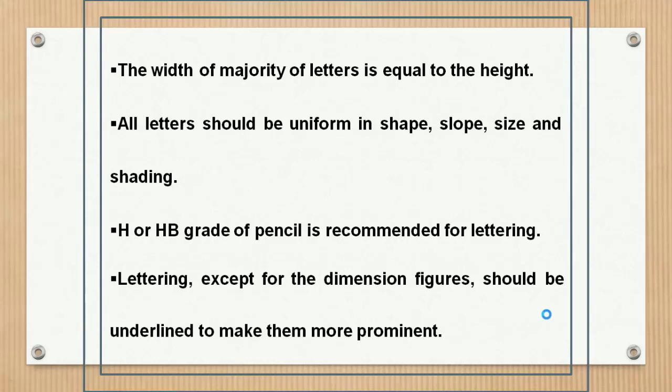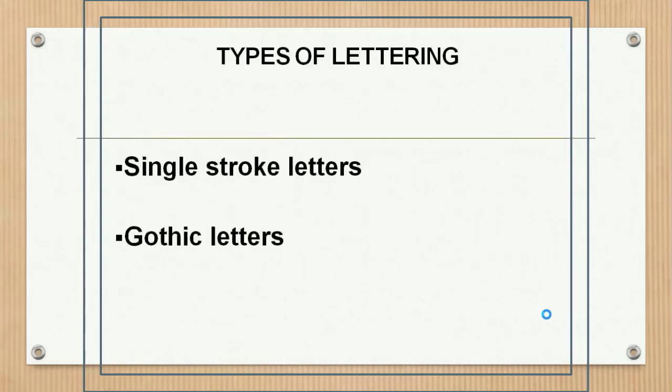Generally, H or HB grade pencil is recommended for lettering. Lettering, except for dimension figures, should be underlined to make them more prominent. There are two types of lettering: single stroke letters and Gothic letters. Let us discuss them one by one.